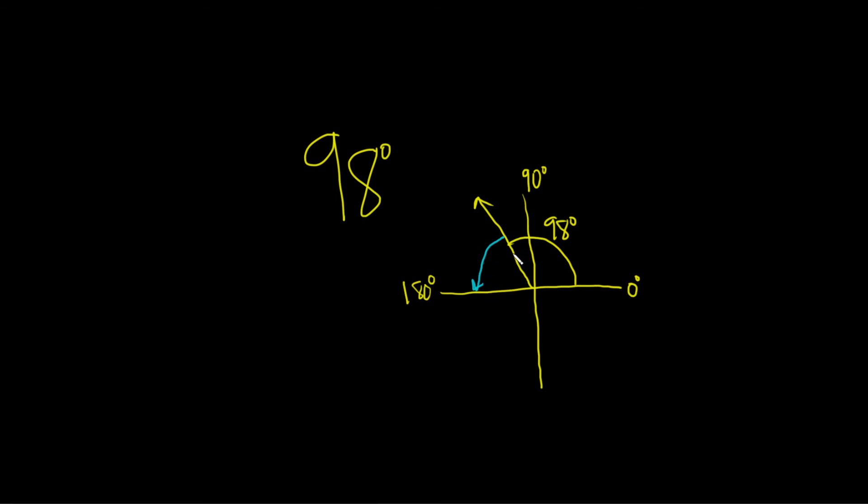So how would you get it in this case? Well in this particular case it's just the difference. So you would do 180 degrees minus 98 degrees. You might say, do you always subtract like this? Do you always subtract 180? No.